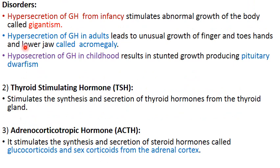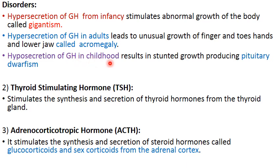Disorders of GH: hypersecretion (excess secretion) of GH from infancy or childhood stimulates abnormal growth, making the person very tall — this is called gigantism. Hypersecretion of GH in adults leads to unusual growth of terminal parts like fingers, toes, hands, and the lower jaw — similar to a gorilla — and is called acromegaly. Under-secretion of GH in childhood results in stunted growth, called pituitary dwarfism.